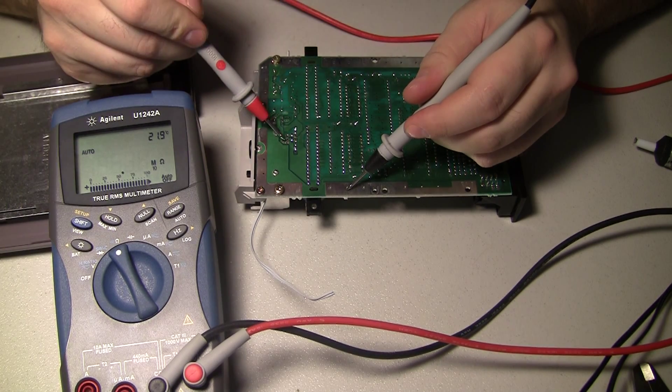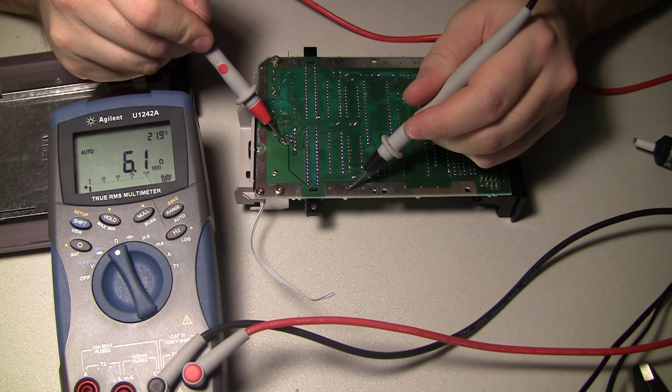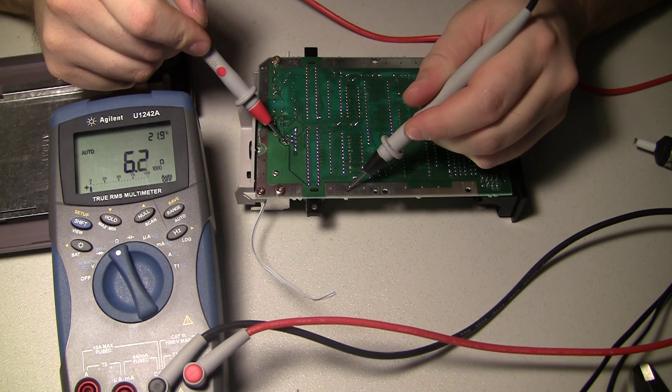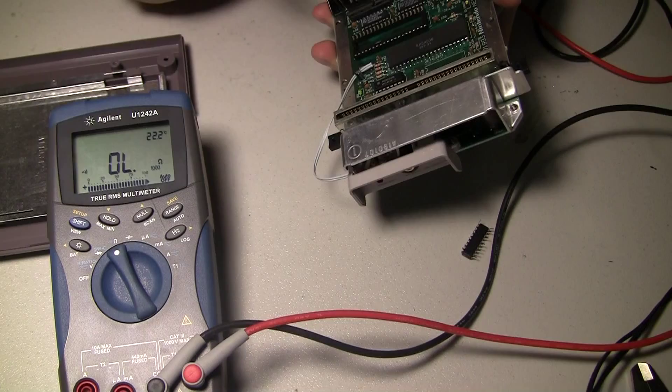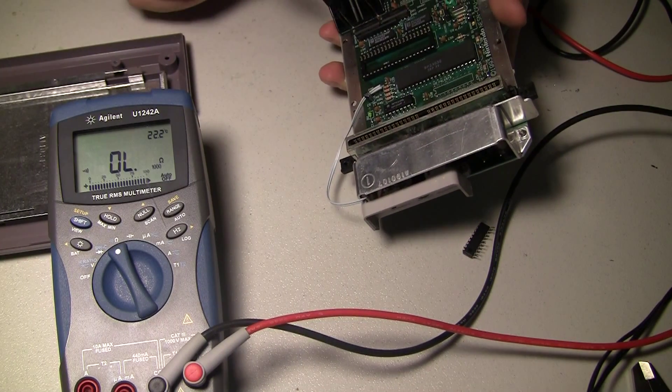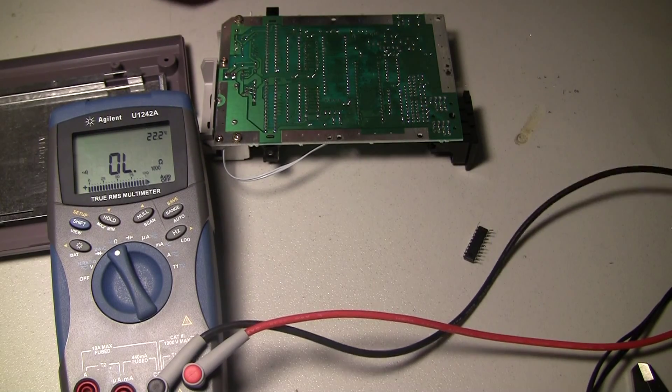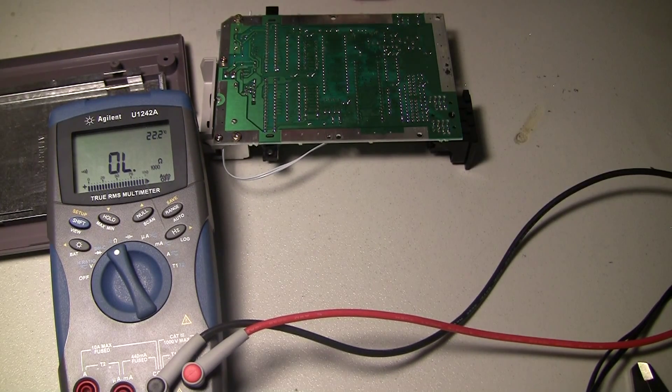I've got six ohms from the 5-volt rail to ground. I'm starting to think maybe it's the CPU. Maybe the first time a CPU has failed on me.